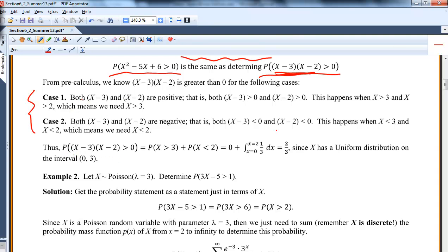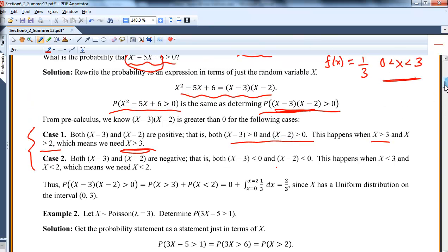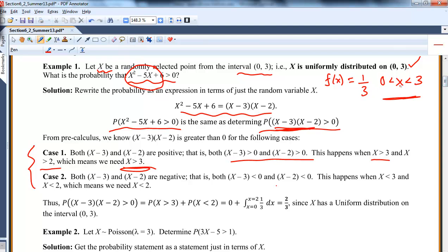I could break down, so both of these have to be positive. That's case one. So case one, if both of these are positive, then I need x bigger than 3 and x bigger than 2. And for both of those to be true, I need x bigger than 3. But I know this isn't going to happen, actually, because we go back up there, the support is 0 to 3, so the probability something's bigger than 3 is 0.